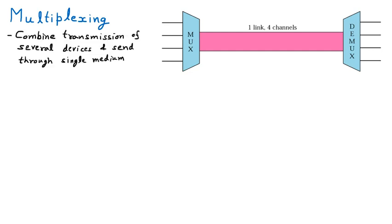To understand multiplexing, let us focus on this diagram. Here you can see that there are four lines coming from four devices — D1, D2, D3, and D4. Data from all four devices is merged and sent through a single channel. This is called multiplexing — combining the data and sending through one medium.